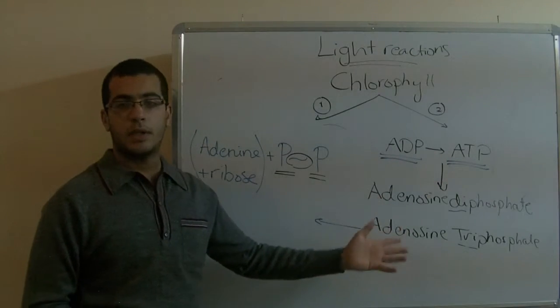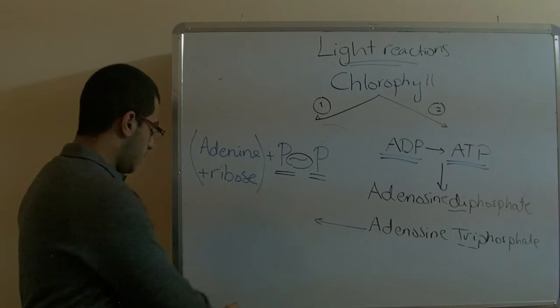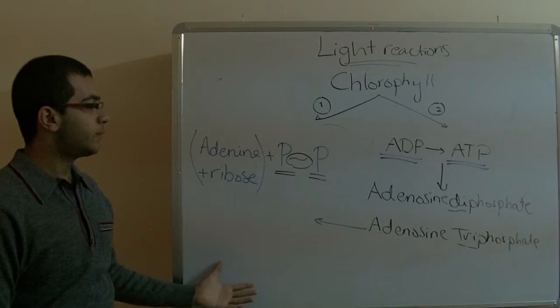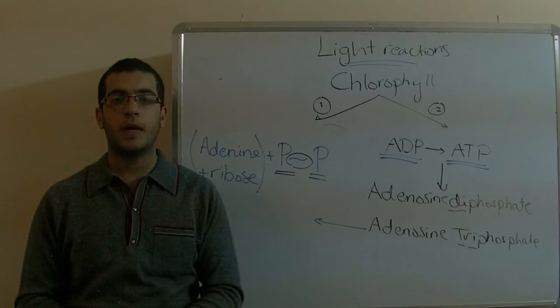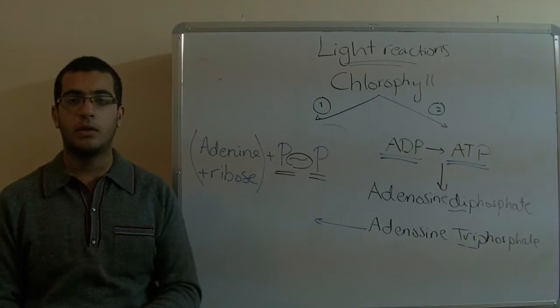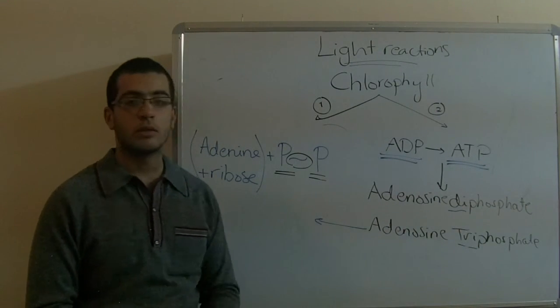This is a universal currency of energy inside plants and animals. These were the light reactions which end with NADPH2, which gets the hydrogen to the dark reactions, and adenosine triphosphate, which also goes to the dark reactions.